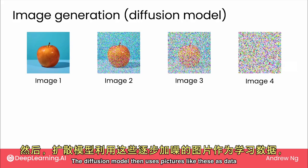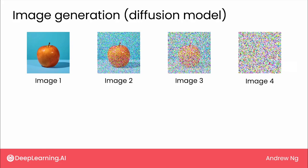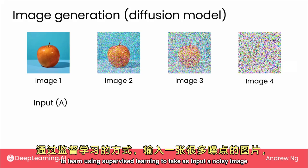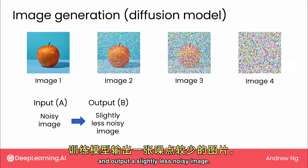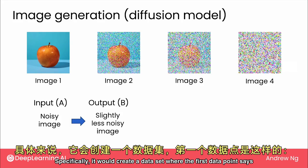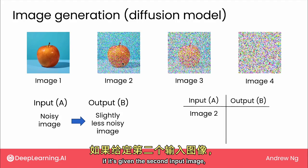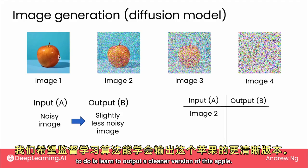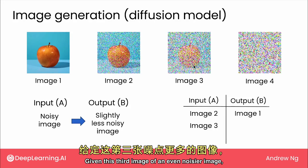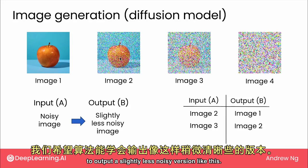The diffusion model then uses pictures like these as data to learn using supervised learning — to take as input a noisy image and to output a slightly less noisy image. Specifically, it creates a data point where, given the second input image, the supervised learning algorithm learns to output a cleaner version of this apple. And here's another data point: given an even noisier image, the algorithm learns to output a slightly less noisy version like this.